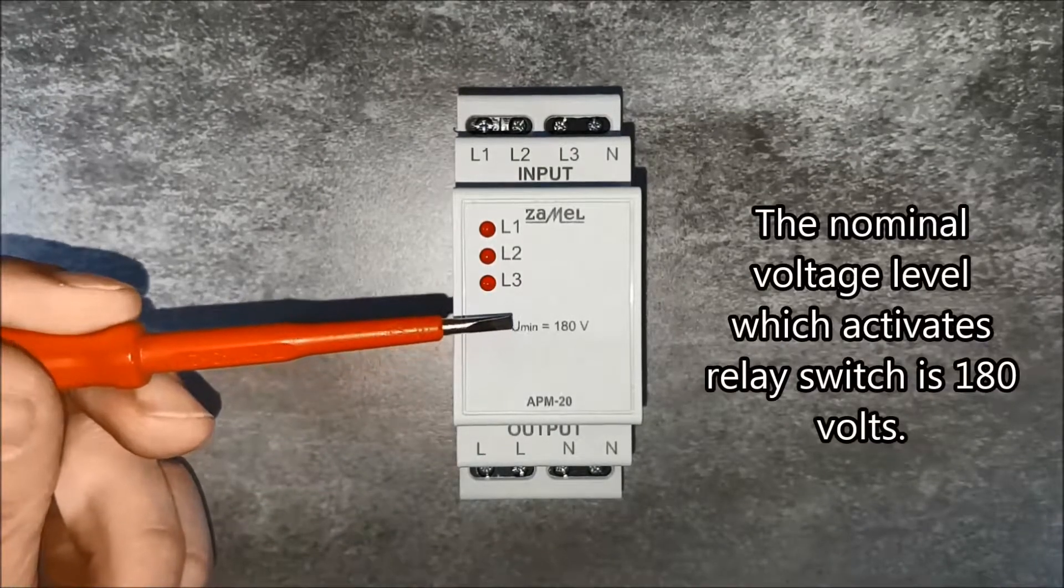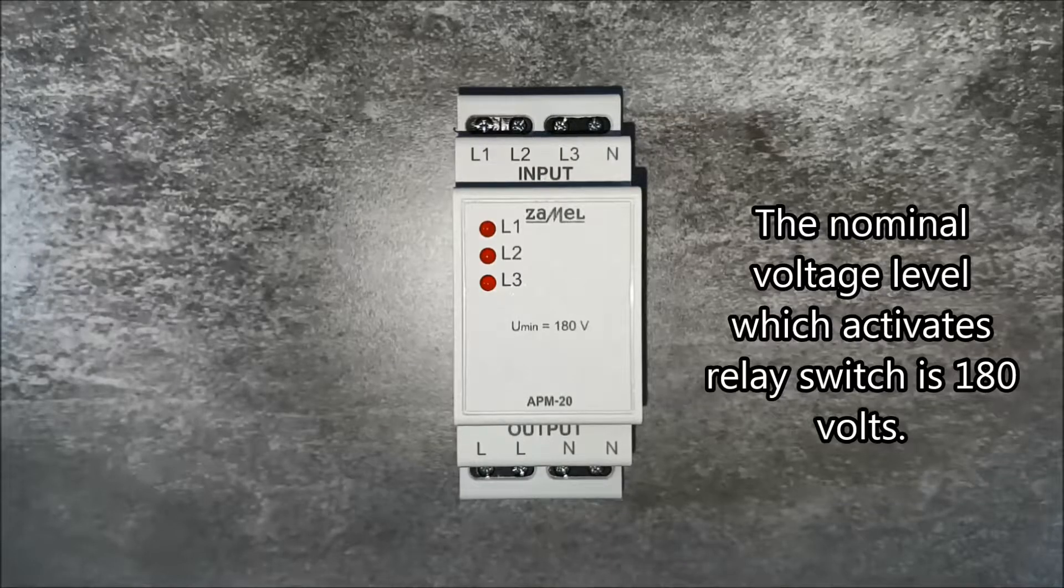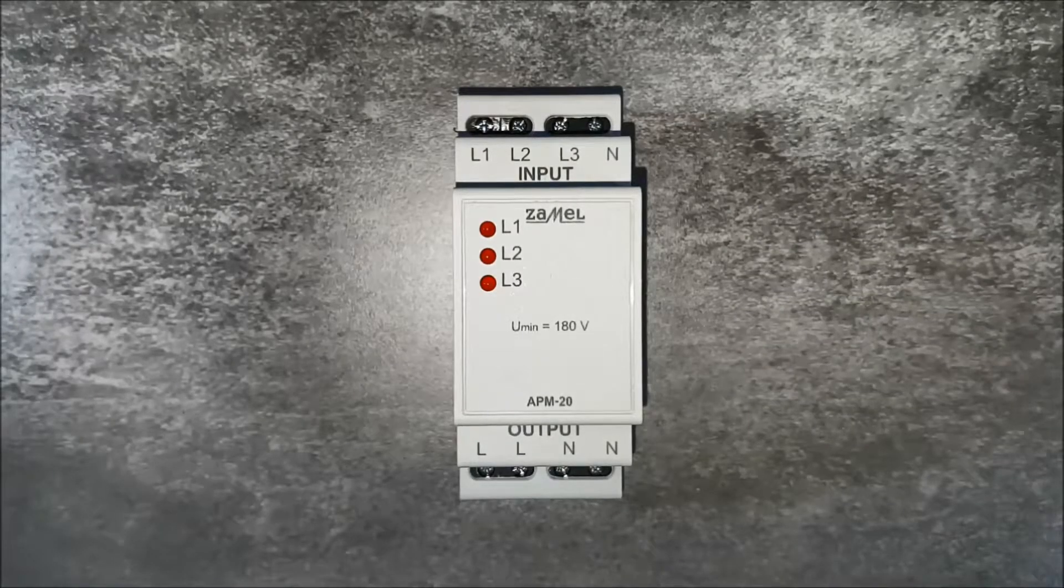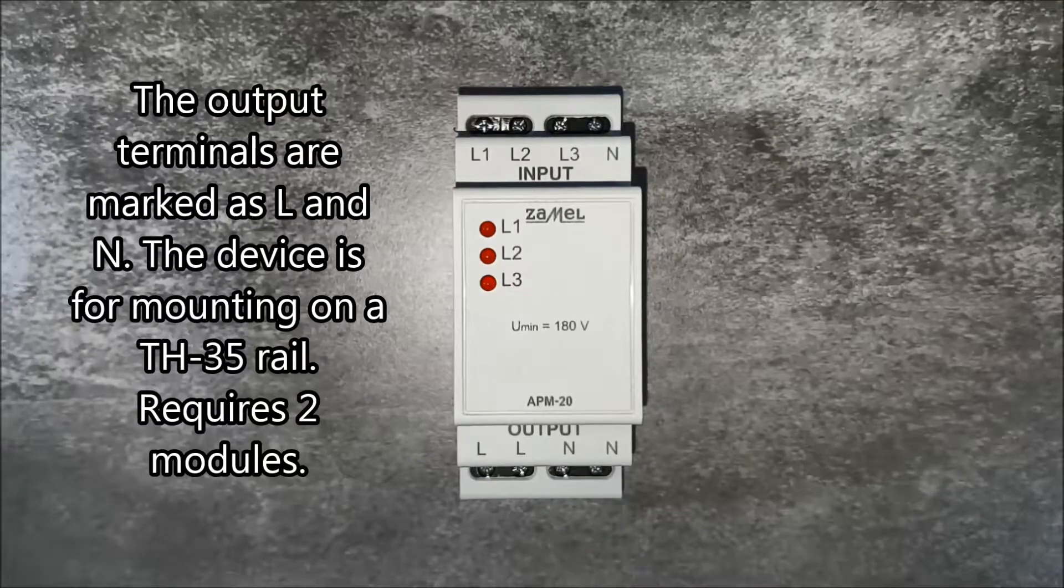The nominal voltage level which activates the relay switch is 180 volts. The output terminals are marked as L and N.